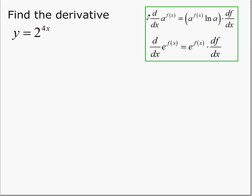In this case we use the first rule here, since the base is not e but another constant. It tells us the derivative is the same function repeated, multiplied by the natural log of the base, and then multiplied by the derivative of the exponent.